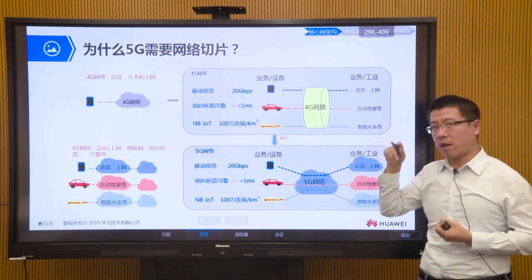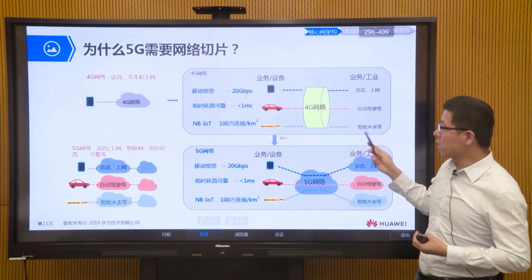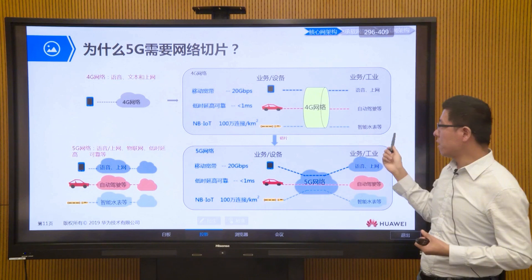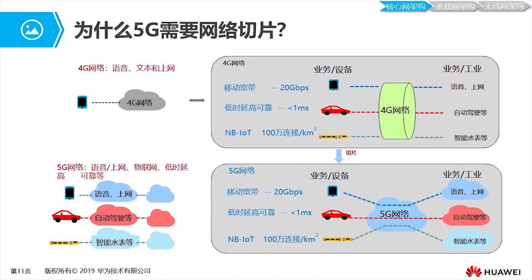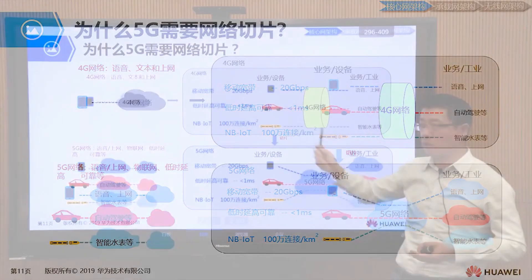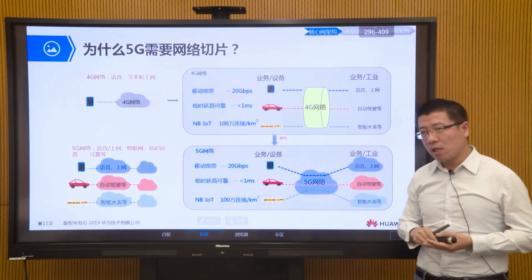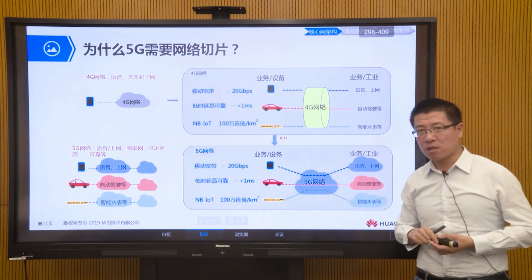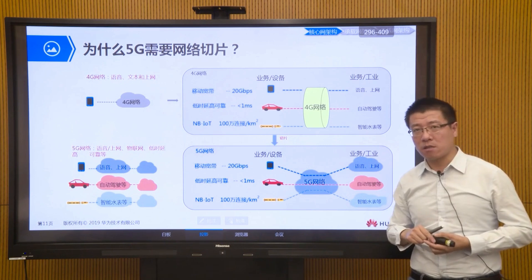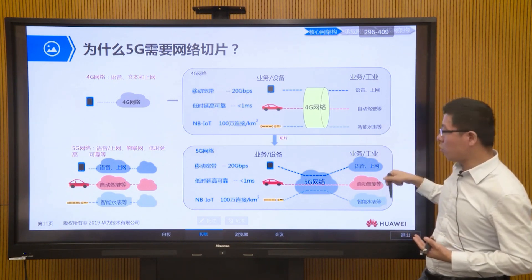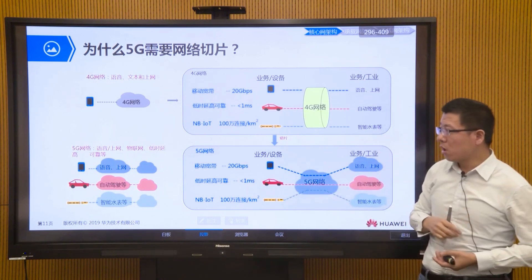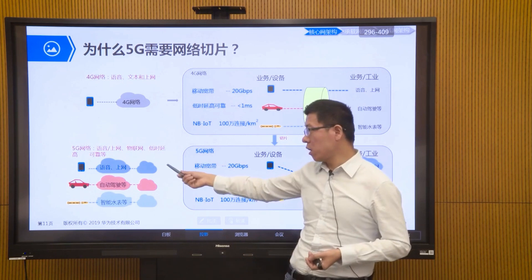Voice services in 4G are implemented through VoLTE technology. For autonomous driving or smart water meter services, we implement IoT through NB-IoT networks developed based on LTE. Low latency down to one millisecond cannot be achieved on the 4G network. Vehicle networking technology was defined based on LTE V2X in 3GPP Release 14, providing some support for autonomous driving to a certain extent.